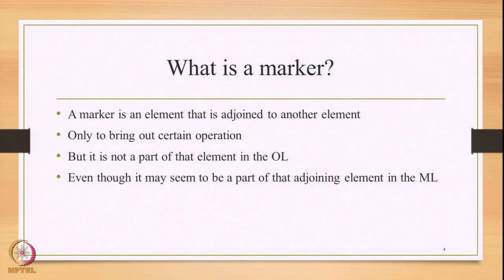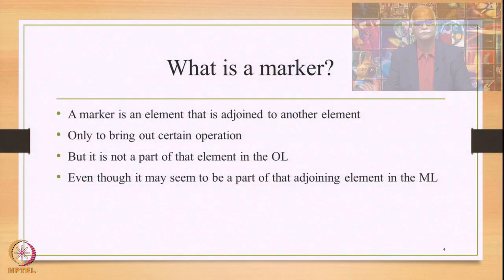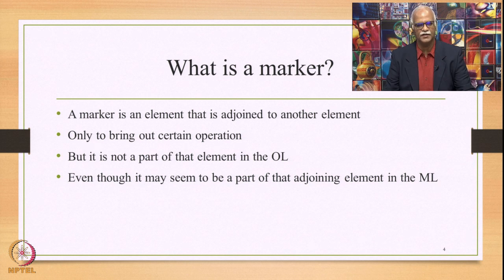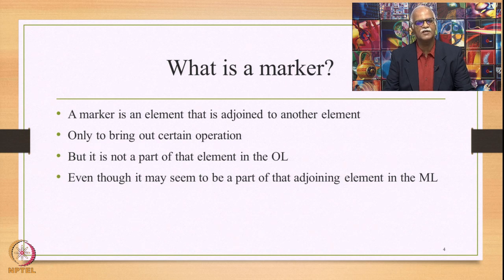So the first question is: what is a marker? A marker is a verbal element that is adjoined to another verbal element, and the sole purpose of this adjoinment is only to bring out a certain grammatical operation. The most important part of this marker is that it is not a part of that element to which it is adjoined in the object language, even though it may seem to be a part of that adjoining element in the meta-language. That is the most important feature of a marker.